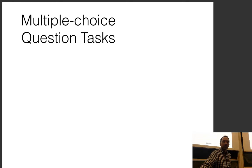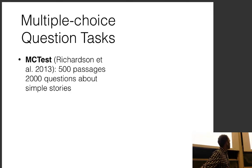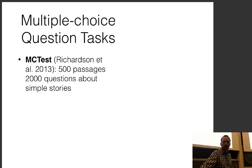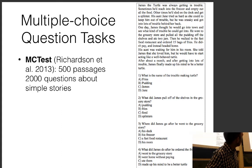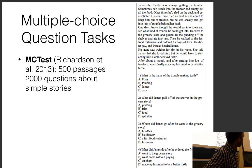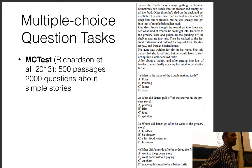One of the original multiple choice datasets is MCTest — 500 passages and 2,000 questions about simple stories. You read a passage like 'James the Turtle was always getting in trouble — sometimes he'd reach the freezer and empty out all the food, other times he'd sled on the deck and get a splinter.' Then you answer: 'What was the name of the troublemaking turtle? Fries, Pudding, James, or Jane?' and 'What did James pull off the shelves in the grocery store? Pudding, Fries, Food, or Splinters?'